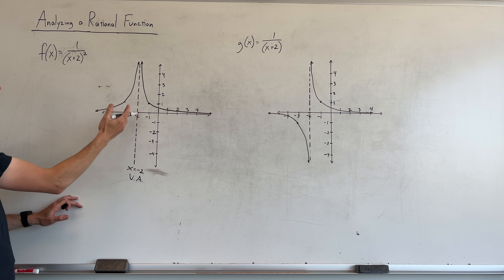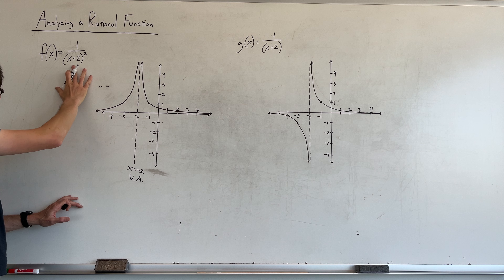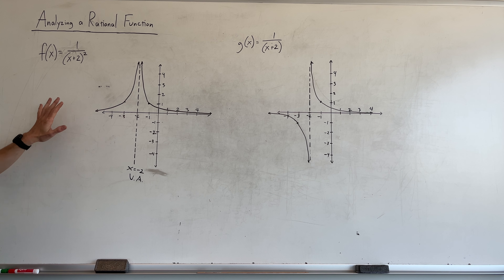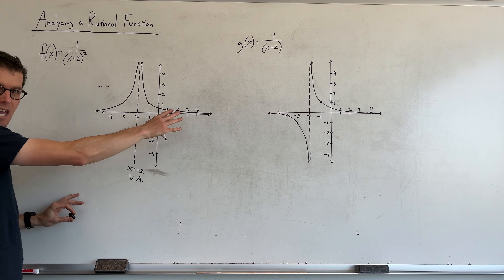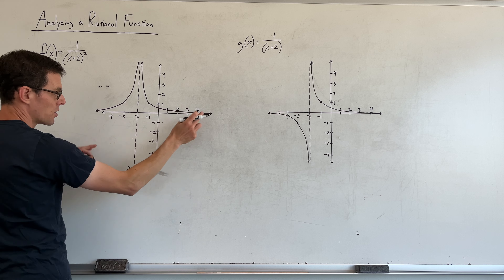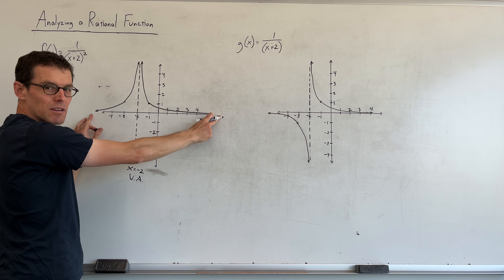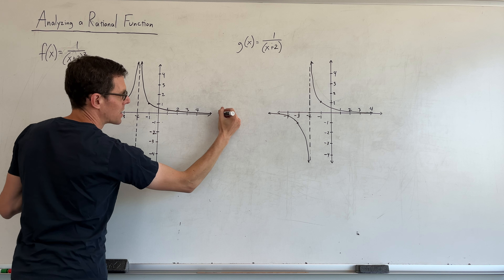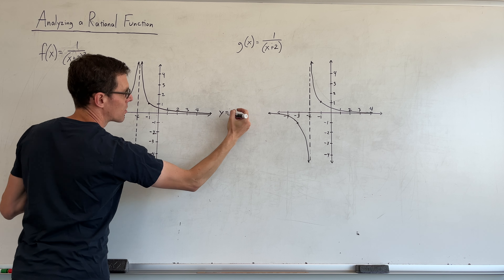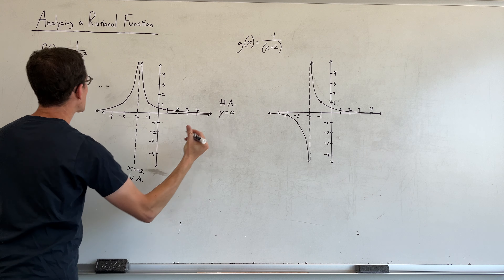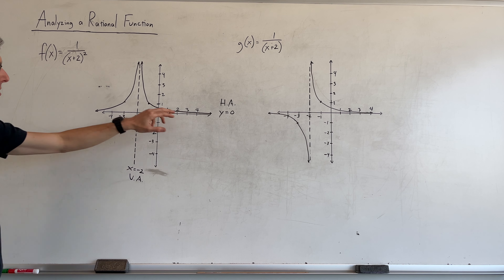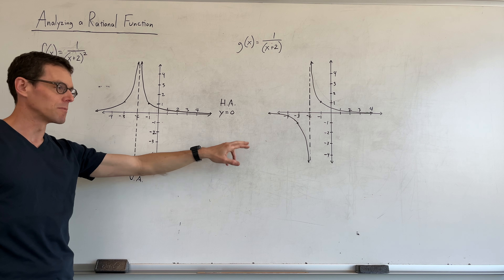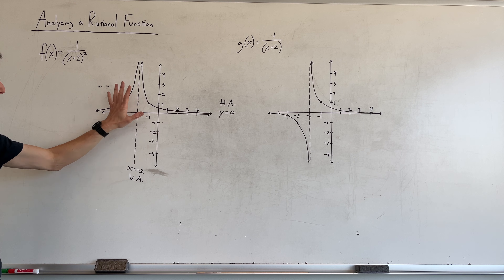This is the vertical asymptote of this graph, and it's moved because the domain has shifted because the function has changed. Also worth commenting on: the end behavior, or the horizontal asymptote, has not changed. The graph is still settling on the line y equals 0. Why? Degree 0 in the numerator, degree 2 in the denominator — from that previous video, when the numerator degree is smaller than the denominator degree, we always get this horizontal asymptote.